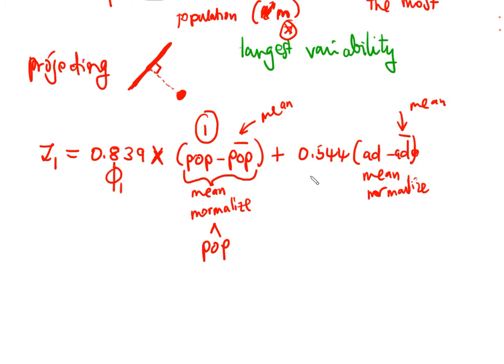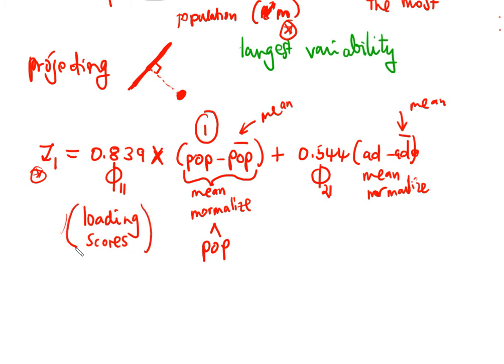Our quest is now to calculate the phi values. This is phi_11 and phi_21, because we're dealing with Z1. These phi values are called loading scores. This video is full of theory, but we'll see the practical side in the next video.